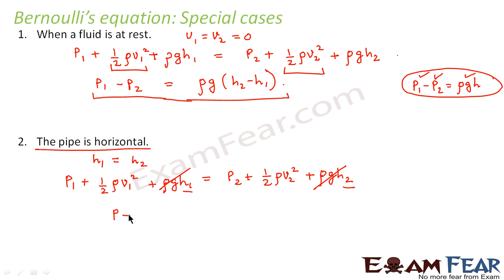So in this case, we can say that if the pipe is horizontal, the Bernoulli's equation will become P plus half rho V squared equals constant. So the Bernoulli's equation will reduce to this if the pipe is horizontal.